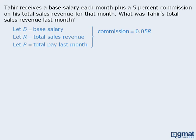We also wrote that P, Tahir's total pay last month, is equal to B, his monthly base salary, plus his commission, which is 0.05R. The target question asks us to find Tahir's total sales revenue. At this point, we have summarized all of the information as well as the target question, so we won't need to re-read this passage later on.